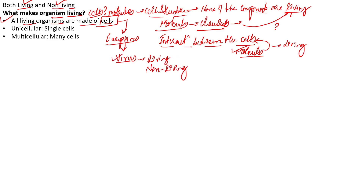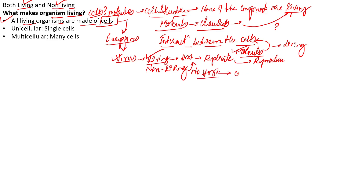What makes the virus living? Because if the virus gets inside the cell — that is the host — it can actually replicate. It can replicate or, in other words, reproduce. The ability of reproduction or replication of the virus makes us call it actually living. However, without the host, the virus cannot reproduce, and based upon this property we say the virus is actually non-living.